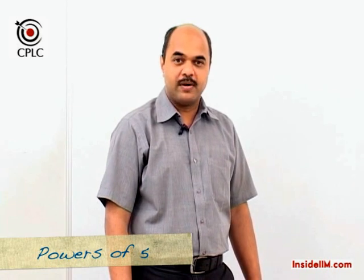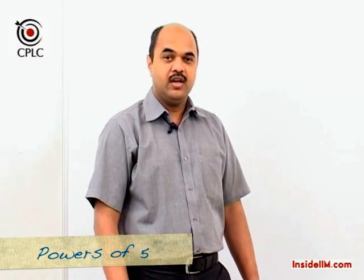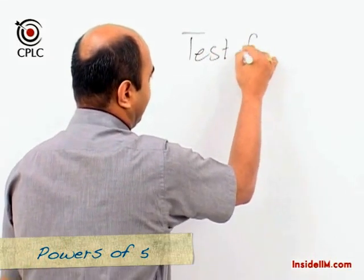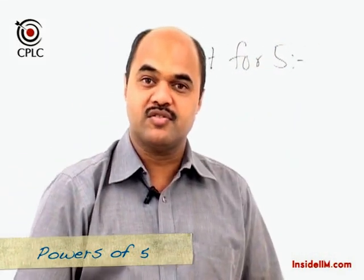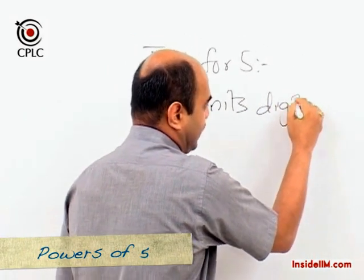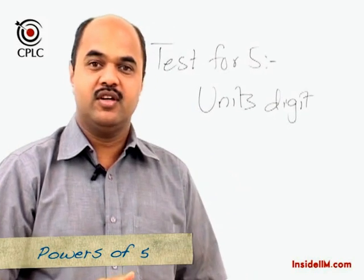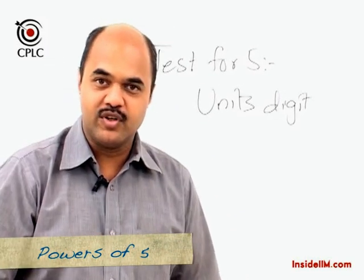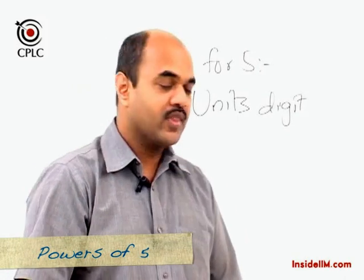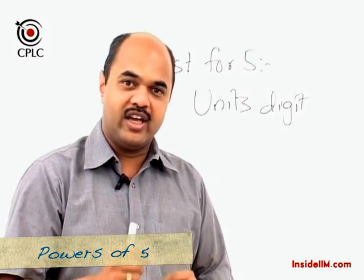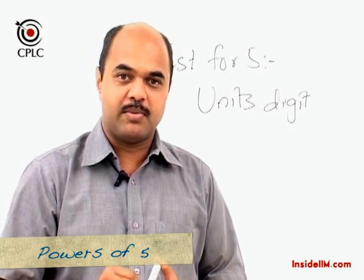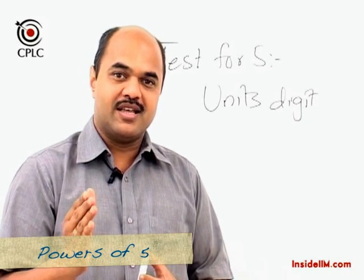We have seen divisibility tests for powers of two and powers of three. Let's now move on to divisibility tests for powers of five. For the test for five itself — how do we know if a number is divisible by five? Very simple: if the units digit of the number is divisible by five, then the entire number is divisible by five. Specifically, if the units digit is five or zero, then the number is divisible by five. For the remainder test for five, we again use only the units digit.